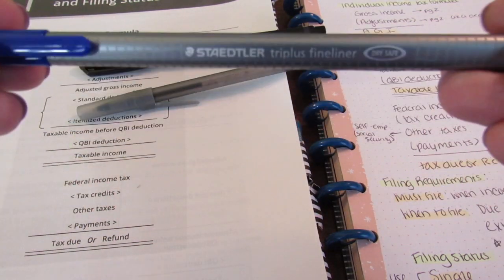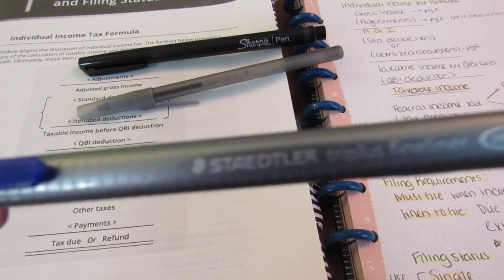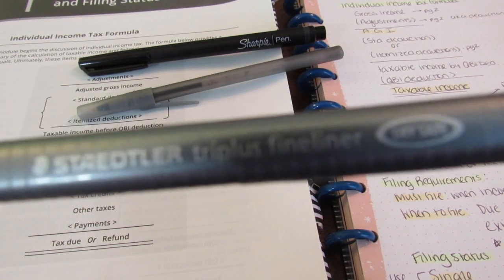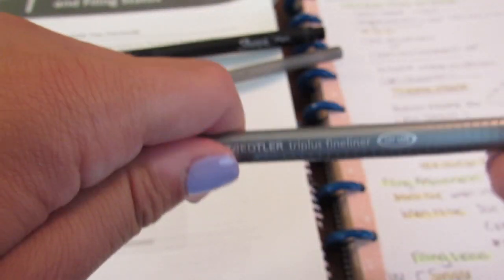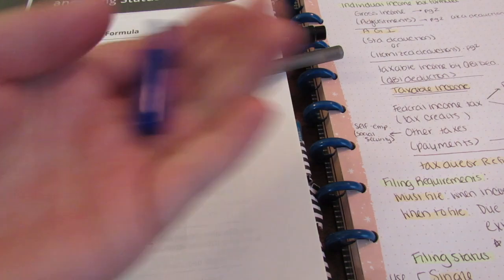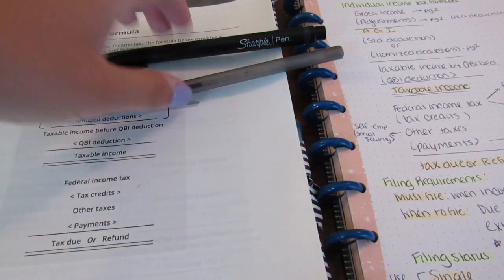Then last but not least it's a Staedtler. Staedtler is my absolute favorite pen, it is the fineliner tri plus. Let's see there we go tri plus fineliner dry safe and this one did dry the fastest which is why like I loved it and I literally wore down the tips to the like bare end.